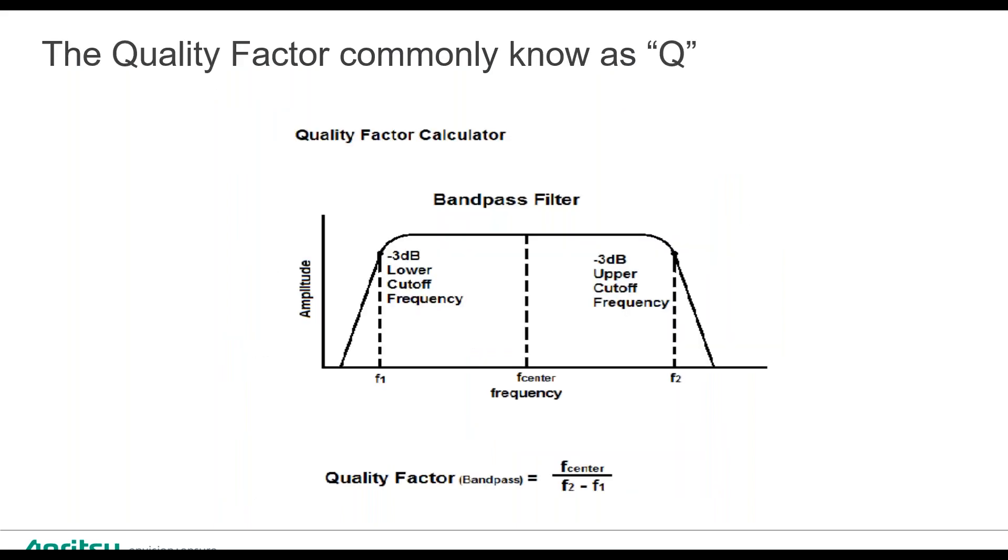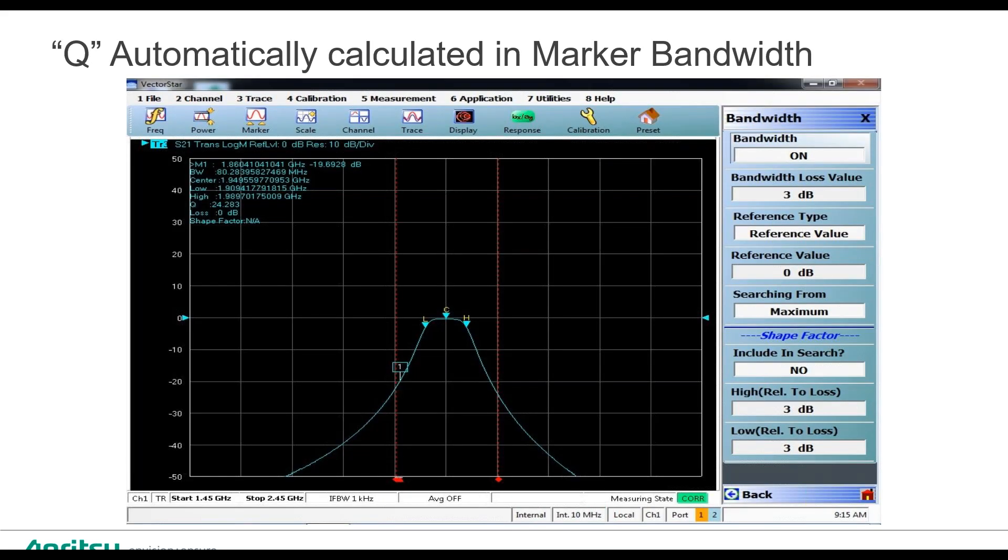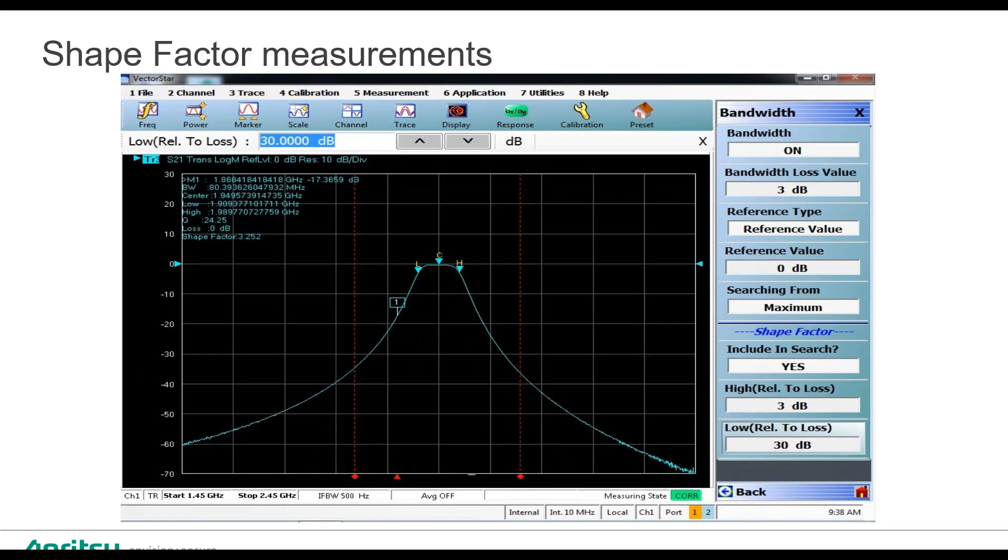Another measurement that's very common is quality factor, commonly known as Q for a filter. As you can see, we can automatically measure Q on the VNA in the bandwidth area. There's also shape factor measurements that the VNA performs as well. You'll commonly see these specifications in a technical datasheet for a filter.